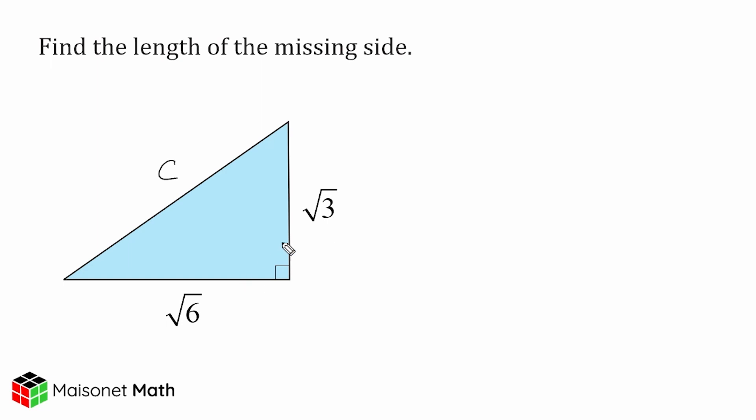We're going to take our two legs and square them. So we have the square root of 3 squared, and then we have to add that to the square of the other leg, which is the square root of 6, so we have to square that. And that is going to be equal to C squared.